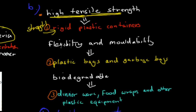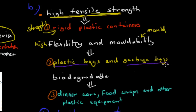Another property is high flexibility and moldability — meaning we can mold it into different shapes. This allows us to make flexible items like plastic bags and garbage bags. Garbage bags need to be both flexible and strong, since they may carry heavy contents. Polylactic acid is a good polymer for garbage bags because it's highly moldable but also has high tensile strength.